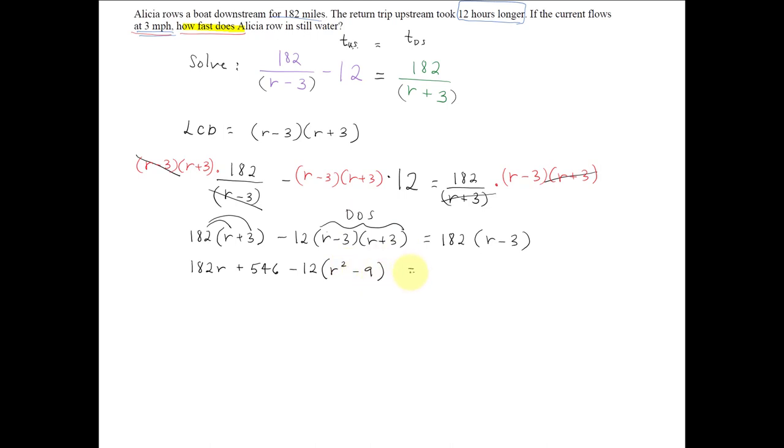So it'll be r squared minus 9 equal to, distributing the 182, we get 182r minus 182 times 3, which is 546.